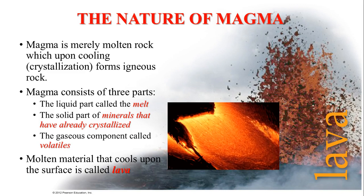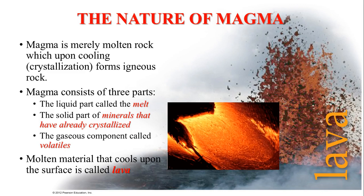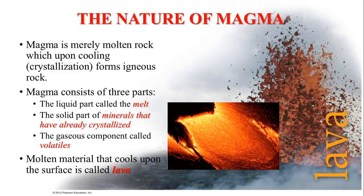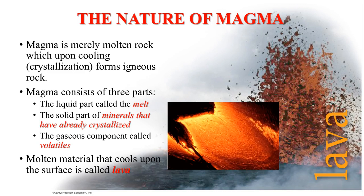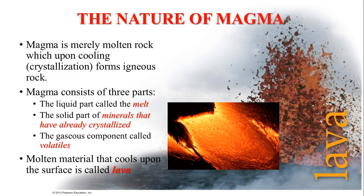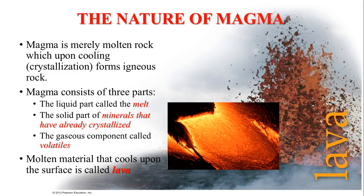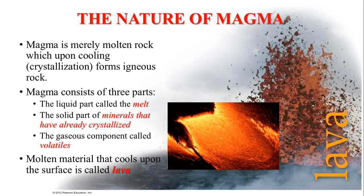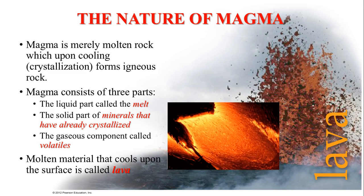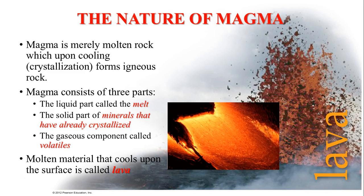Whenever you start talking about magma, you have to realize that magma does consist of three parts: the liquid part called the melt, the solid part which are the crystallized minerals, and the gaseous component called volatiles. So there are three major components of magma.